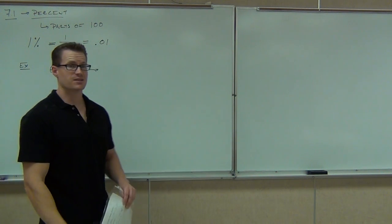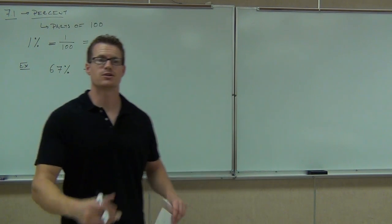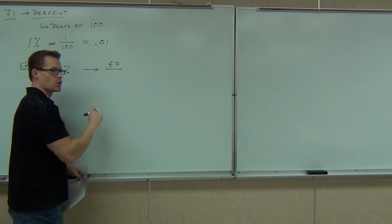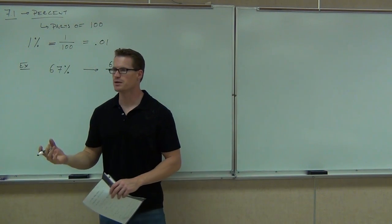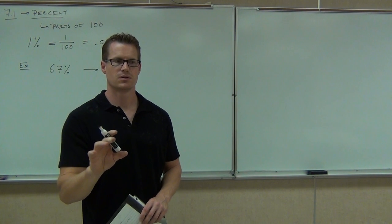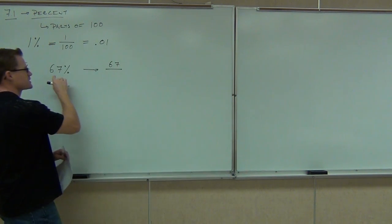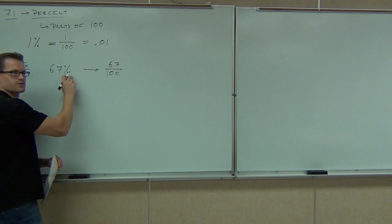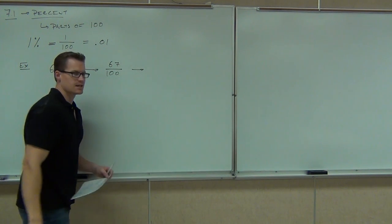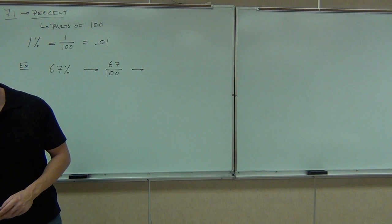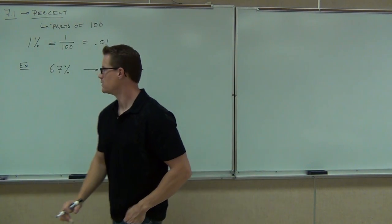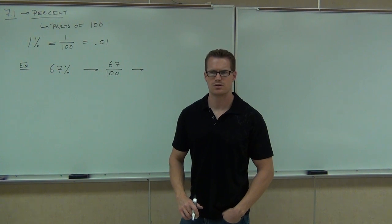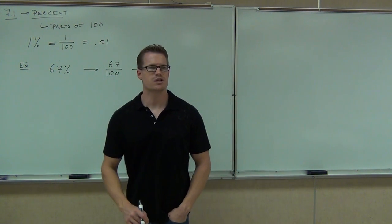Can you write 67% as a fraction first? It's always parts of a hundred — that's what percent means. So what's going to be on the denominator of your fraction? A hundred. This says 67 parts out of 100. Could you write it as a decimal? Point six seven. How are we getting 0.67? You move the decimal two places. If you have 67%, if you had to put a decimal on this problem, where would you put the decimal? Right after the 7.